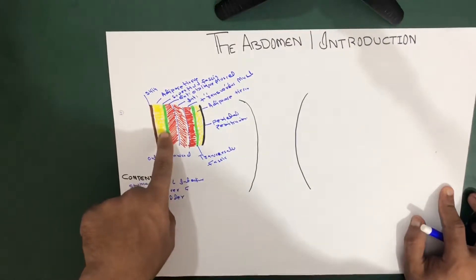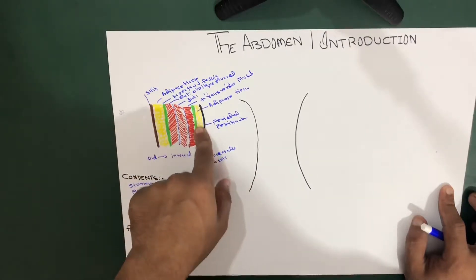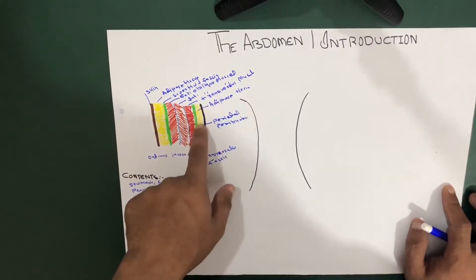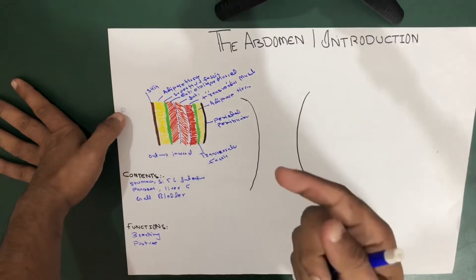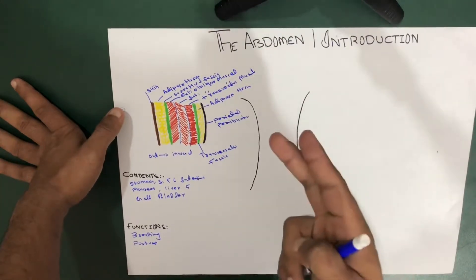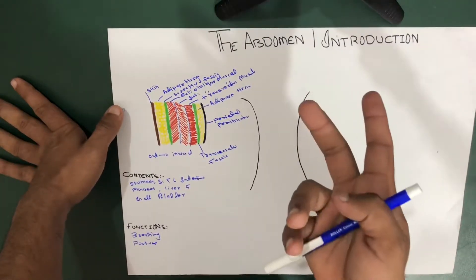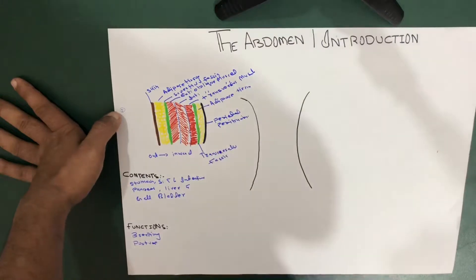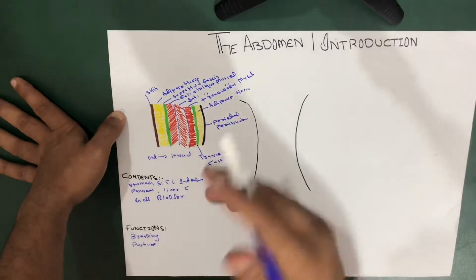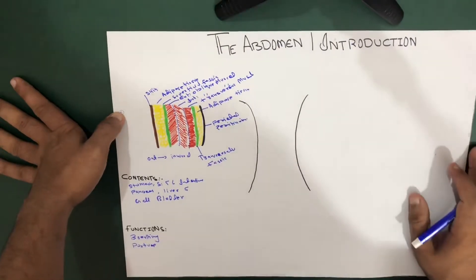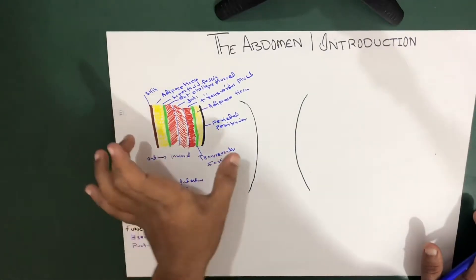After the transversus muscle, we encounter another fascia — this is the transversalis fascia, which is different from the superficial fascia. After crossing the transversalis fascia, we again encounter adipose tissue, and then we encounter the parietal peritoneum. The peritoneum is a layer with two parts: the visceral peritoneum and the parietal peritoneum — similar to the pleural cavity which has the visceral pleura and parietal pleura. The parietal peritoneum covers the outer layer; as we move inward through the cavity, we encounter the visceral peritoneum.